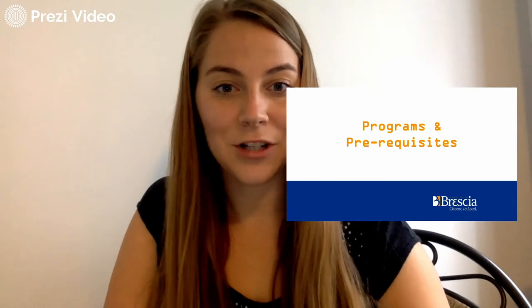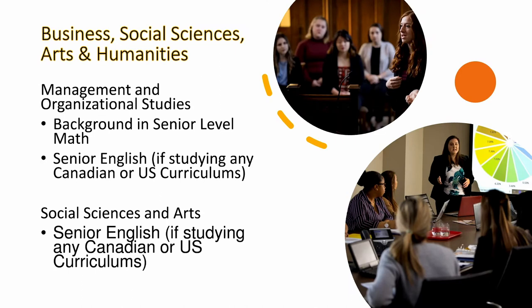Now let's take a look at the programs and prerequisites offered at Prussia. For social sciences, arts and humanities, these programs don't have too many prerequisites. However, if you're studying a Canadian or US high school curriculum, we do need a senior level English course, which will be used in your admissions average. If you're interested in business — also known at Prussia as Management and Organizational Studies — we look for a background in mathematics. This is recommended but not required if you're studying a curriculum outside of Ontario. We also look for a senior English to be completed if you are studying any Canadian or American curriculums.